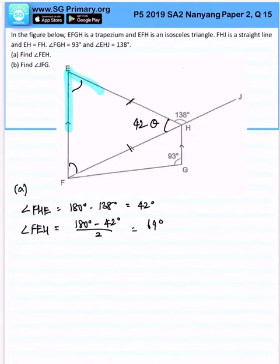Got it? So this will be 69, this will be 69. Part B, angle JFG. What is angle JFG?